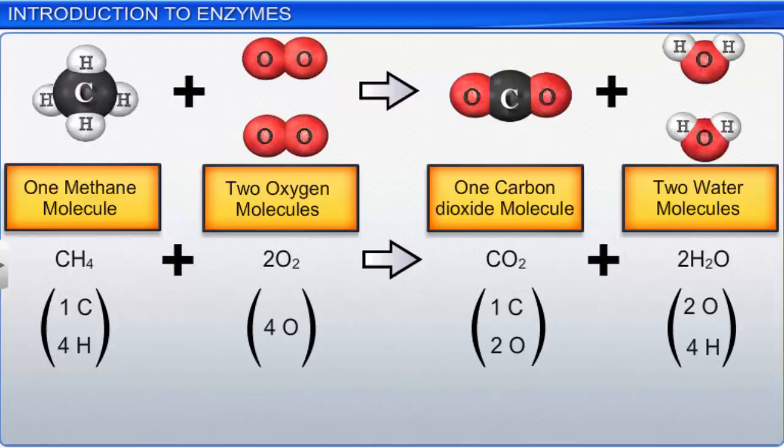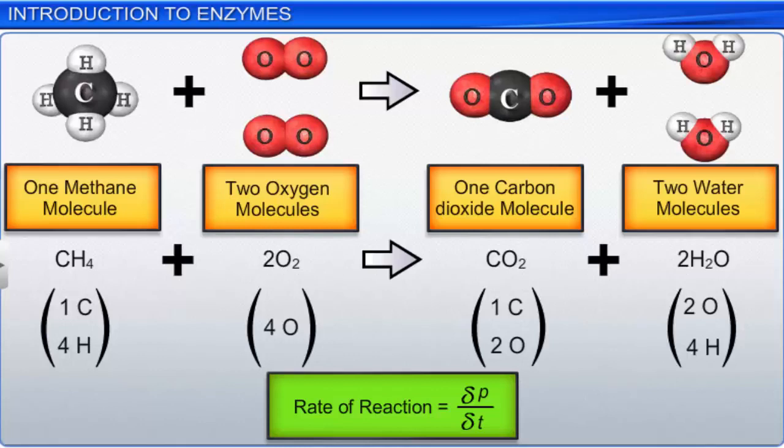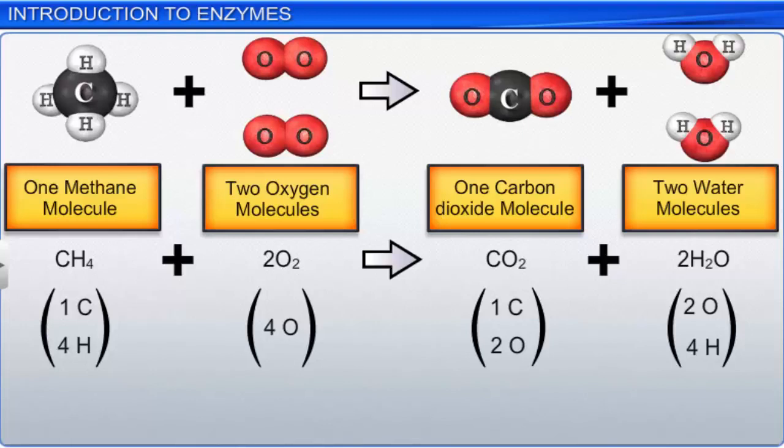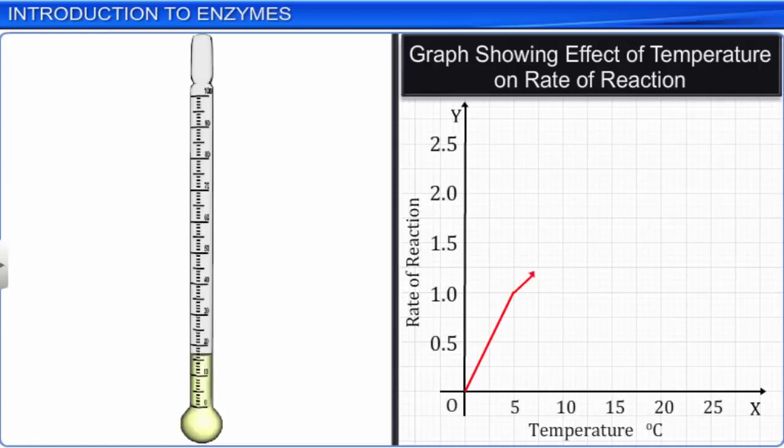The rate of a reaction is defined as the amount of a product formed per unit time. It can be expressed as delta P upon delta T. Various factors such as temperature and pressure influence the rate of reaction.